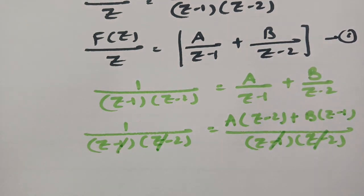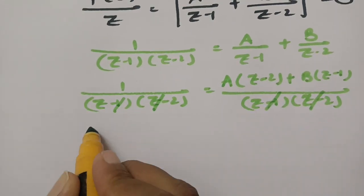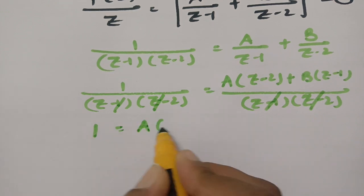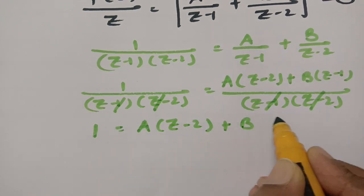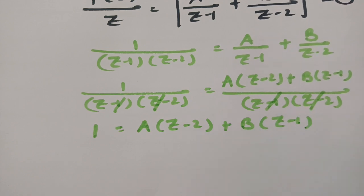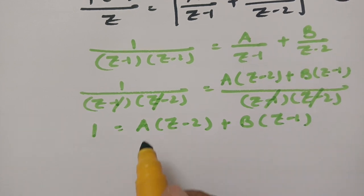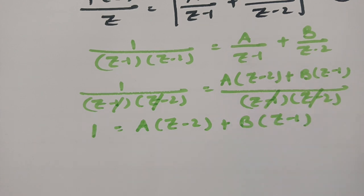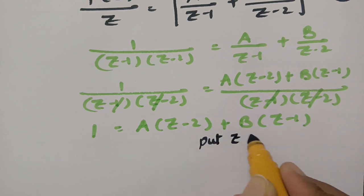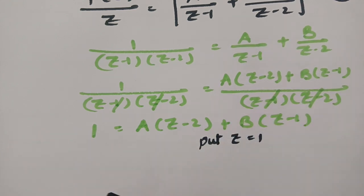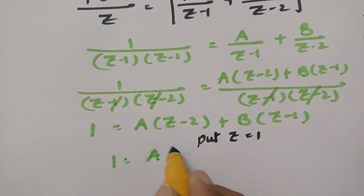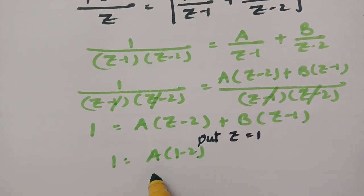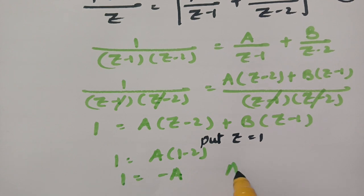Now I will cancel the denominators and equate: 1 is equal to A into Z minus 2 plus B into Z minus 1. In order to get the value of A, I have to make B equal to 0. For that, I put Z equal to 1. This gives A into 1 minus 2, which is minus A, and therefore A is equal to minus 1.